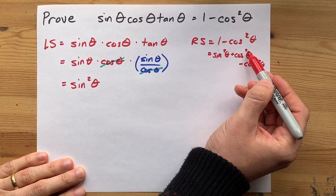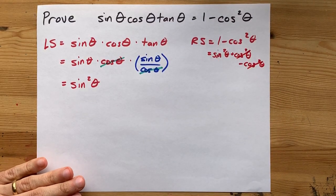Plus cos squared, minus cos squared, cancel each other out, and you're left with sine squared.